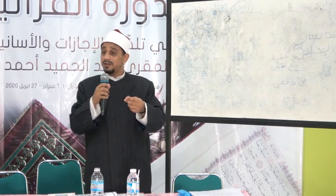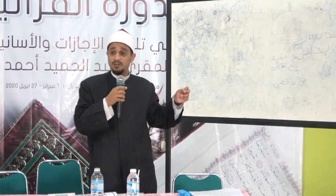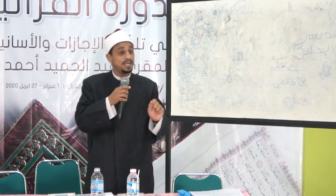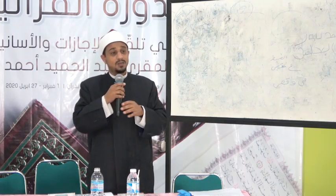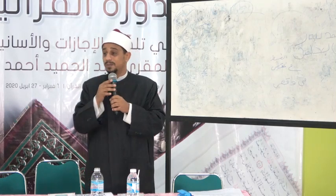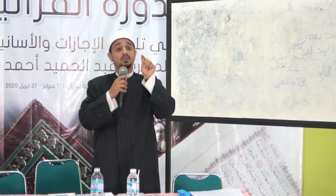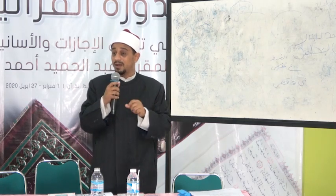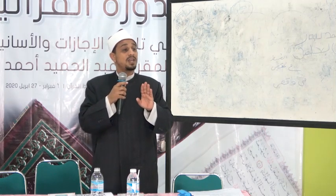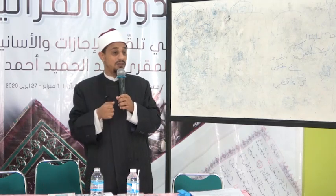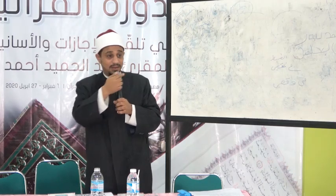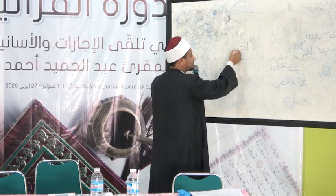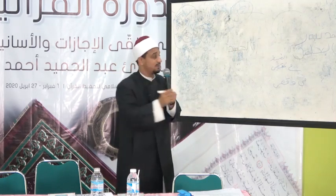فاختار أبو الأسود أربعين شاباً يحسنون الكتابة من أفضل قبائل العرب، فوقع اختياره على شخص من قبيلة عبد قيس وقال له: 'إذا فتحتُ فمي فضع نقطة أعلى الحرف، وإذا كسرتُ فمي فضع نقطة أسفل الحرف، وإذا ضممتُ فمي فضع نقطة أمام الحرف، وإذا سكنتُ فلا تضع شيئاً'. وأمره أن يكتب بمداد يخالف مداد المصحف، أي بلون غير اللون الأسود.